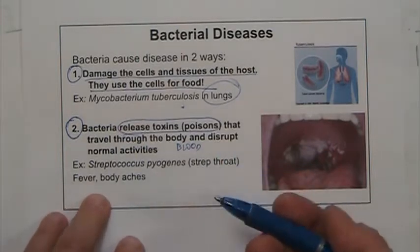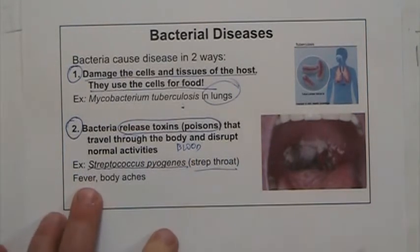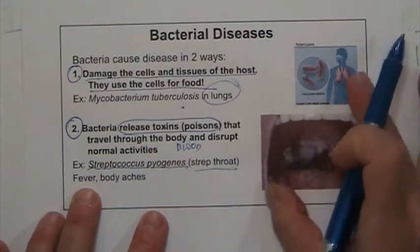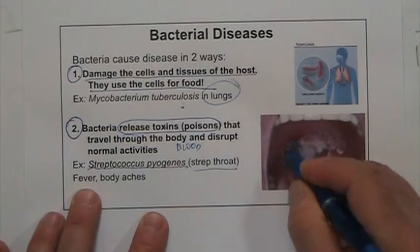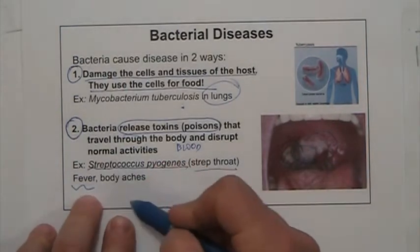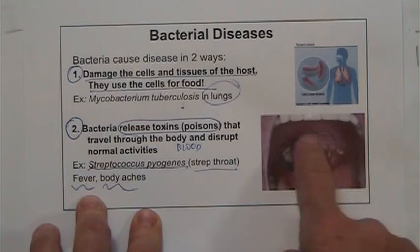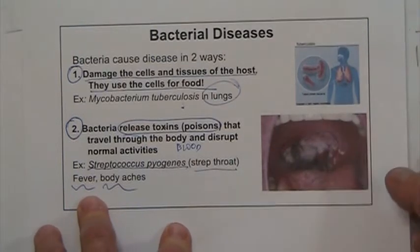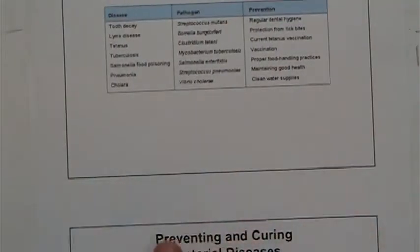In the case of Streptococcus pyogenes, which causes strep throat, the bacteria grow in the throat and produce toxins that cause fever, body aches, and a very painful sore throat. All that white material in the back of the throat is the bacteria growing there. A normal throat does not have those white plaques — that's one way you can tell if you have strep throat.